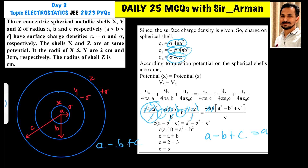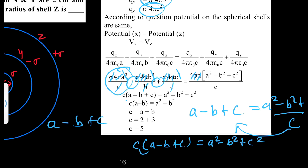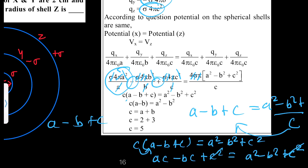On the right-hand side we have (a² − b² + c²) / c. Bringing c to the left side gives: c(a − b + c) = a² − b² + c². Expanding the left side: ac − bc + c² = a² − b² + c². The c² terms cancel from both sides, leaving: c(a − b) = a² − b².